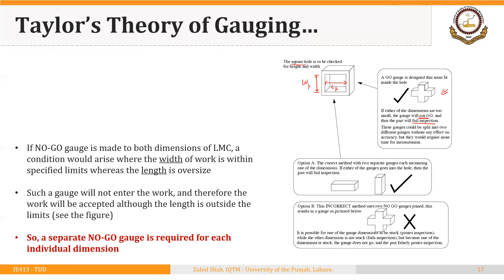However, this is not the case for a no-go gauge. If you make the no-go gauge of the same shape as the go gauge, then if either of the two dimensions — width or length — is greater than the permissible limits, this no-go will not pass and we will wrongly accept the part. This gauge will reject the part only when both length and width are greater than the upper limits, which is a risk.